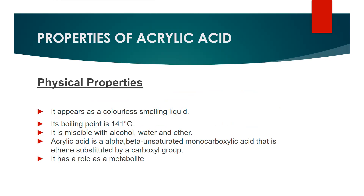Properties of acrylic acid. Physical properties: it appears as a colorless liquid and the boiling point of acrylic acid is 141 degrees Celsius. It is miscible with water, alcohol, and ether. Acrylic acid is the alpha, beta unsaturated monocarboxylic acid that is ethene substituted by a carboxylic group. It has a role as a metabolite. A metabolite is basically a substance made or used when the body breaks down food, drugs, or chemicals, or its own tissues such as muscles or fat tissues.